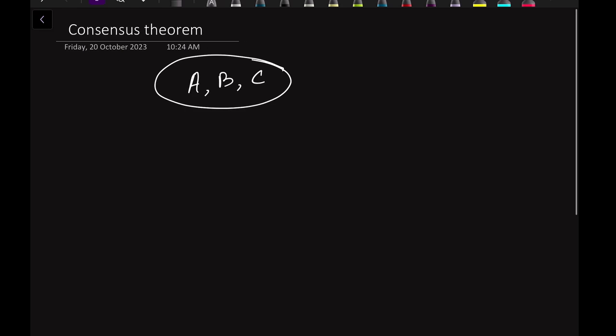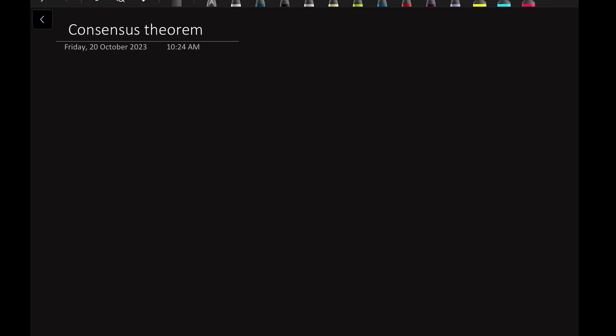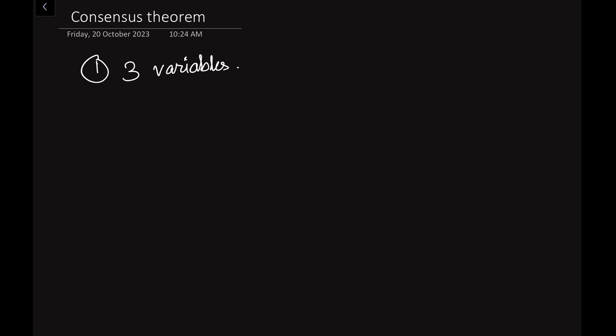In the case of the Consensus Theorem, the first condition is that there must be three variables. Let me write that down — three variables should be present. Let us consider A, B, and C as the three variables.